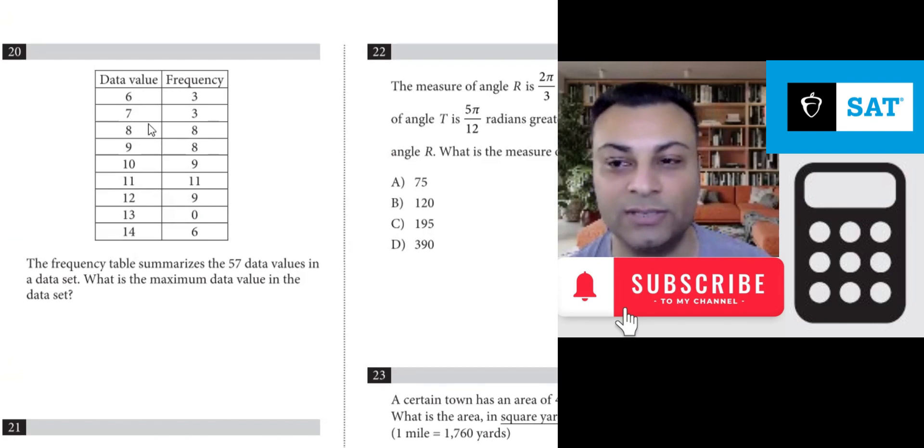But the way you would read this is the value of 6 occurs 3 times, the value of 7 occurs 3 times, the value of 8 occurs 8 times. If you wrote this out,